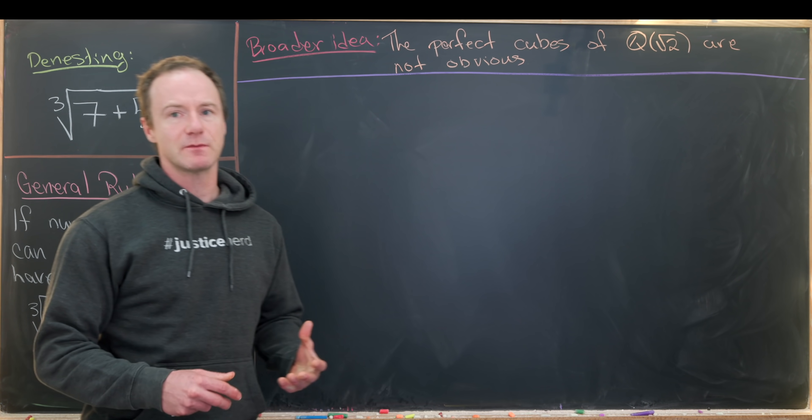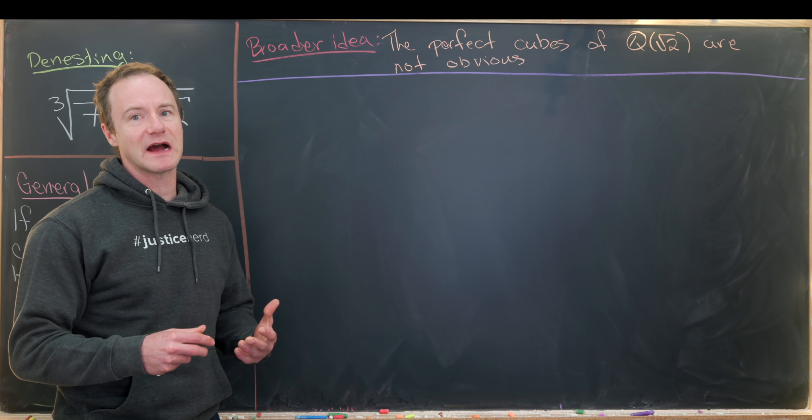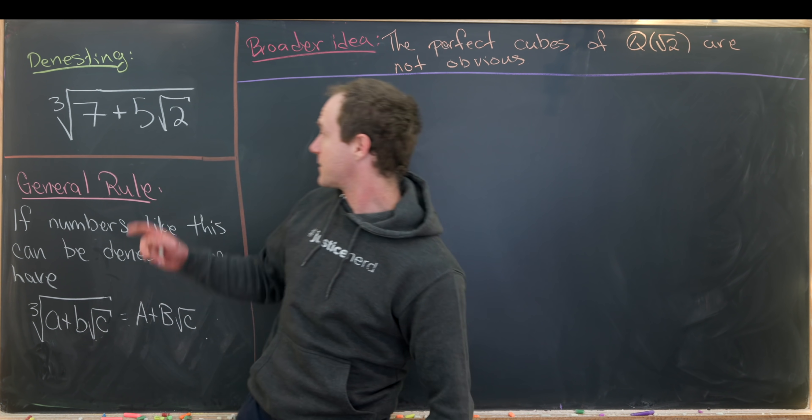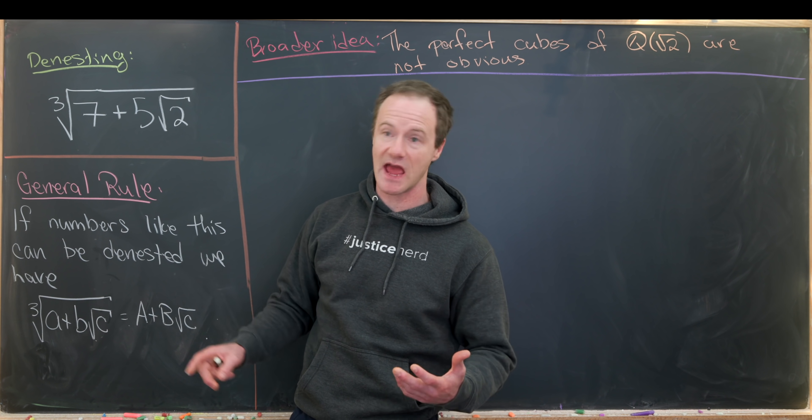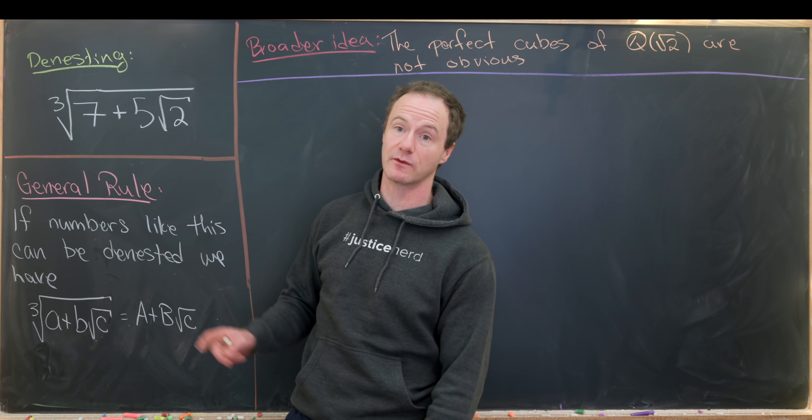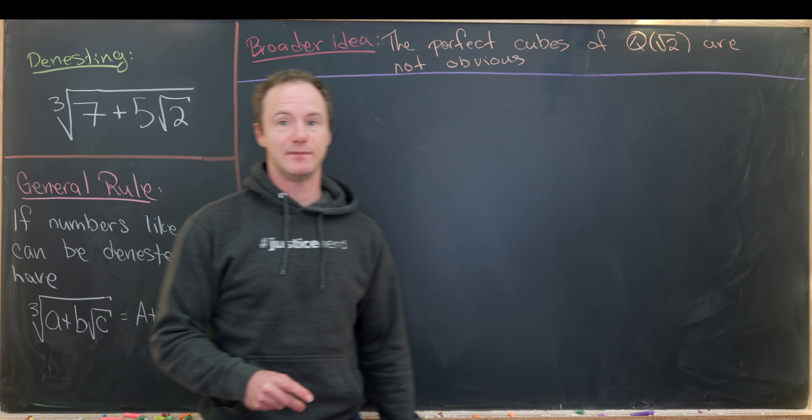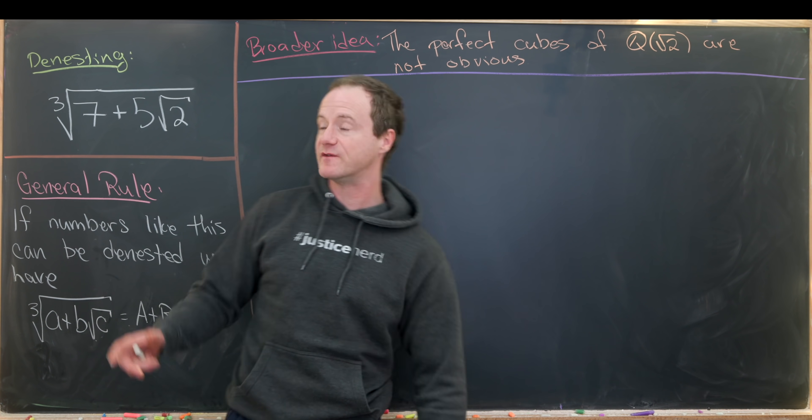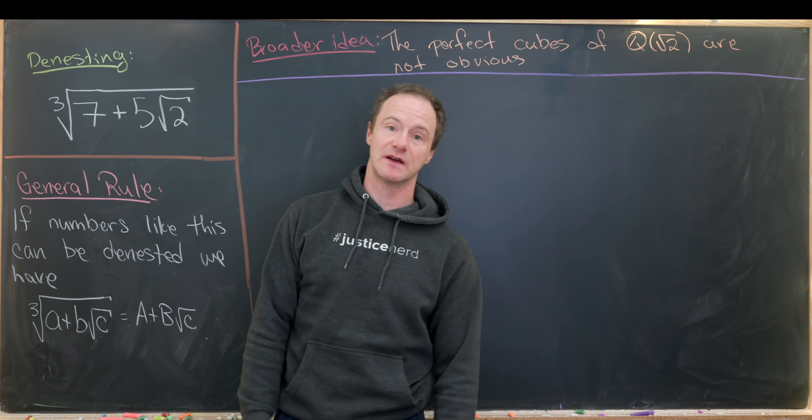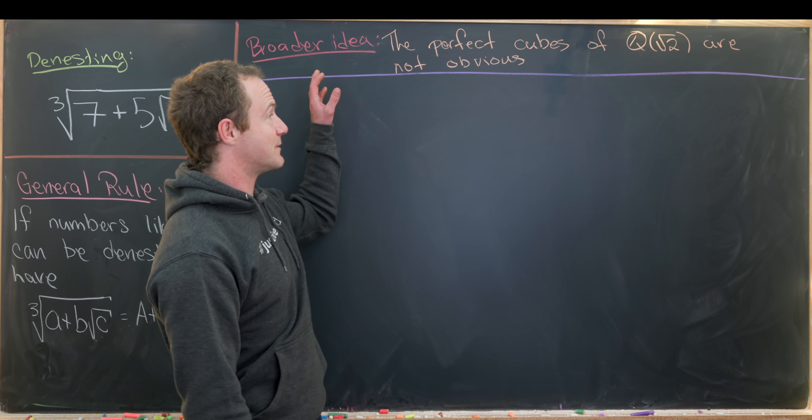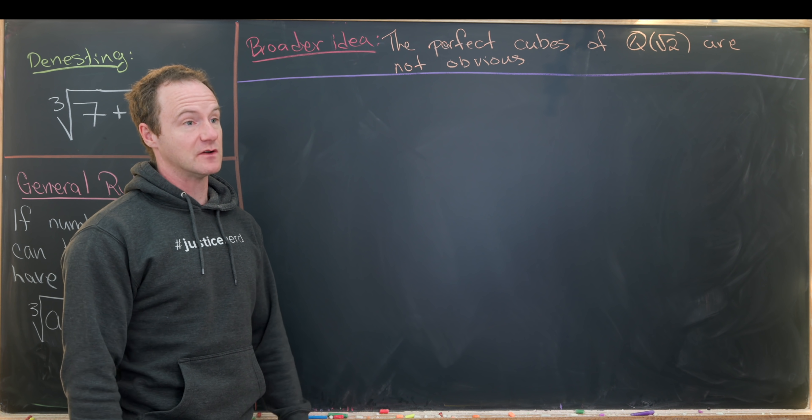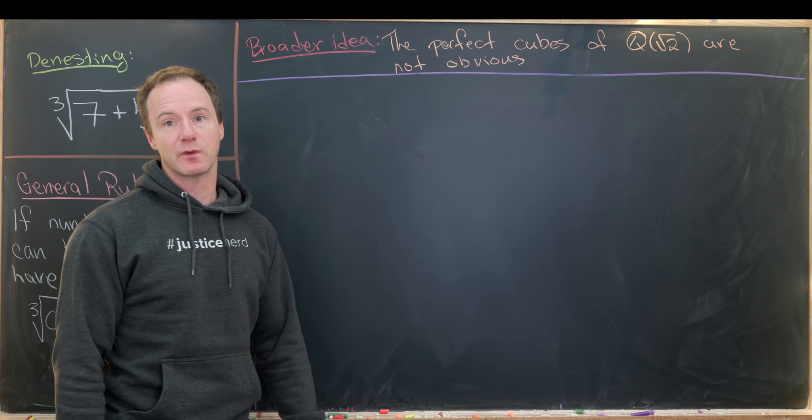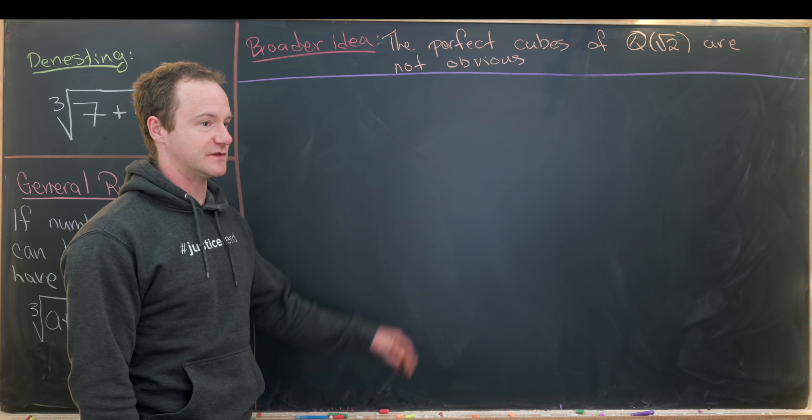Now you might say well is something broader happening or what's the big idea here? Well if we can take this number right here and denest it as a plus b times the square root of two where a and b are rationals then indeed what we've done is shown that this seven plus five times the square root of two is a perfect cube in this kind of enlarged field of rational numbers where we have adjoined the square root of two.